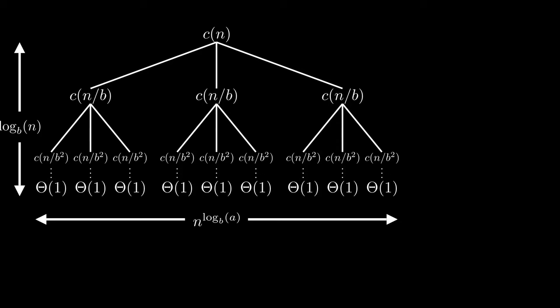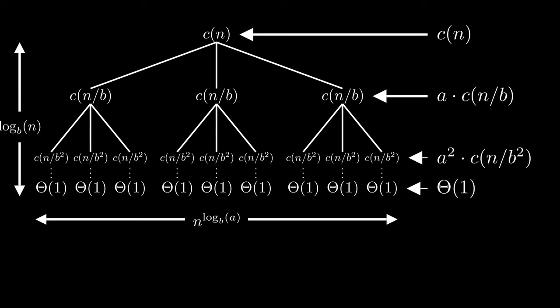Let's start to get a feeling how the total work changes each level. The first level is easy, as we have only one node. On the next level, each node has a work of c of n divided by b. How many of those do we have? Obviously a, because it's the branching factor. Next level. Each node has a work of c of n divided by b squared. We again have a branching factor of a, but this counts for all parallel nodes, of which we have a as well, thus a squared. This goes on and on. In the bottom level, we have theta of 1 for each leaf. We know we have n to the power of log b a of them. This can be simplified to theta of n to the power of log b a.